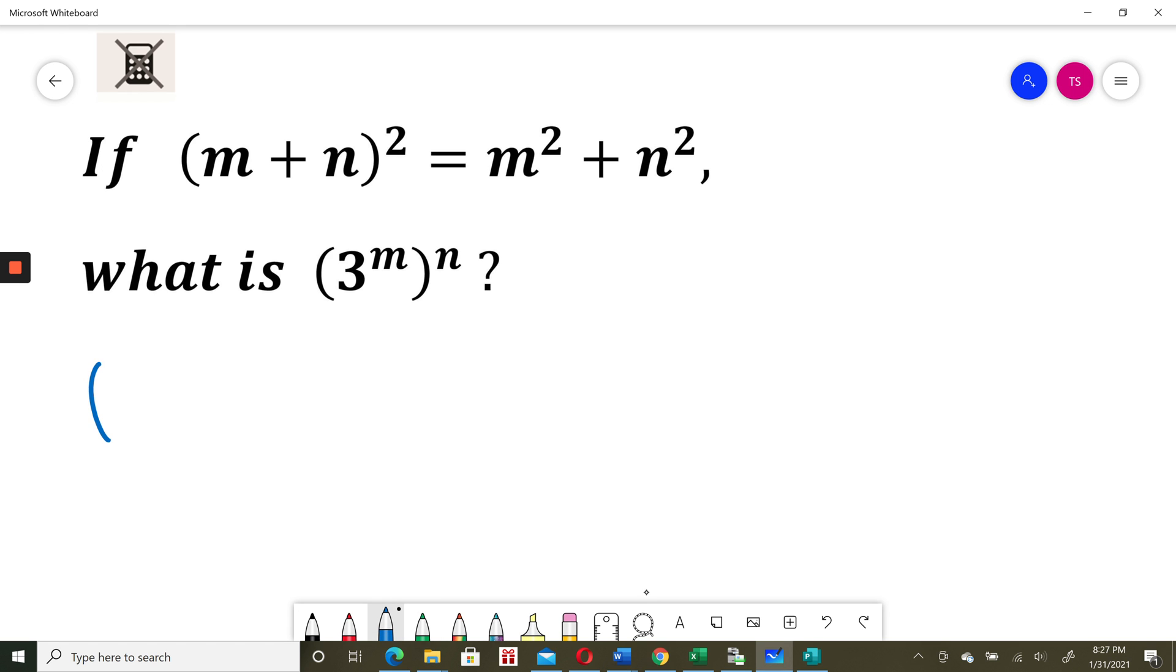I need to calculate (3^m)^n. When I have power to power, I'll use the power rule and multiply the powers m times n. So (3^m)^n equals 3^(mn). Now I need to stop.